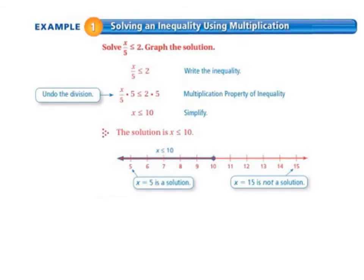We'll be starting on page 340 in your math textbook. Example 1, Solving an Inequality Using Multiplication. We're going to solve x over 5 is less than or equal to 2 and graph the solution.